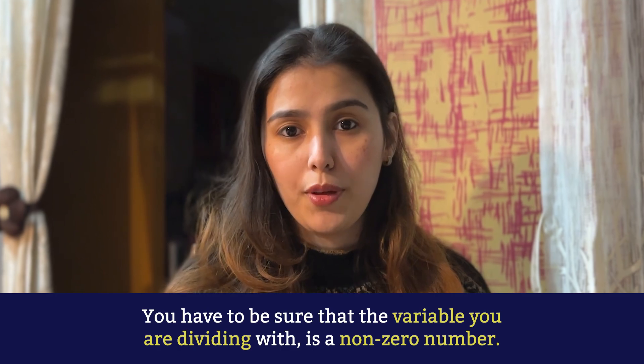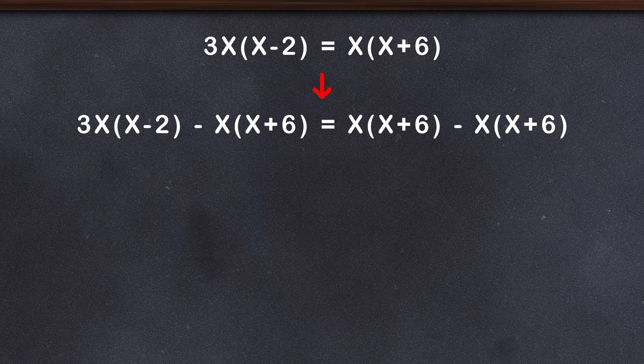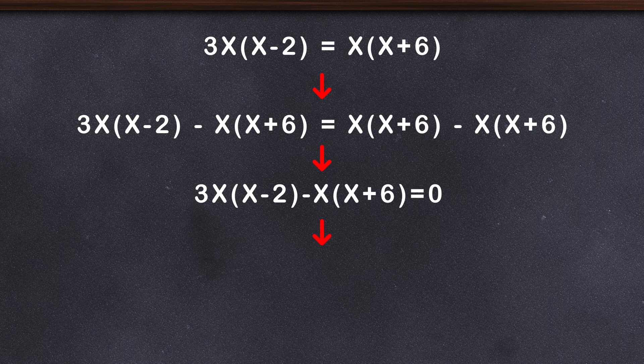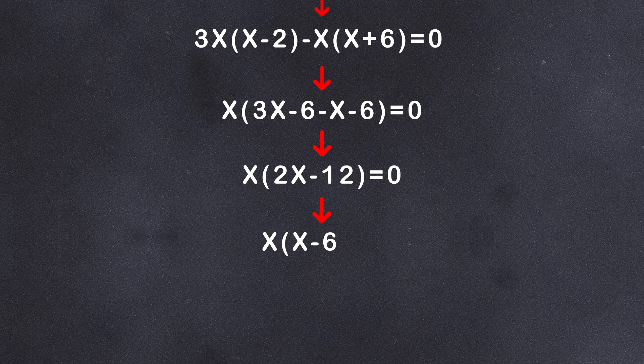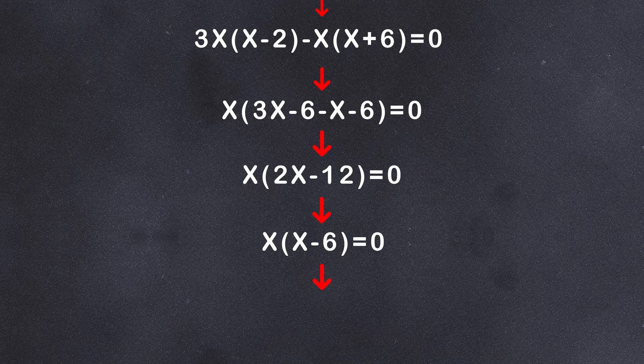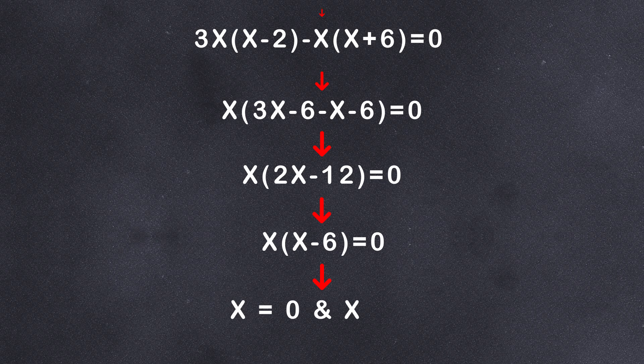This is how you should have approached the problem. 3x(x - 2) = x(x + 6). Subtracting x(x + 6) from both sides: 3x(x - 2) - x(x + 6) = 0. Then we can get to the common factors so we can combine the statements: x(3x - 6 - x - 6) = 0, x(2x - 12) = 0, x(x - 6) = 0, dividing 2 from both sides, and we get the solutions as x = 0 and x = 6.